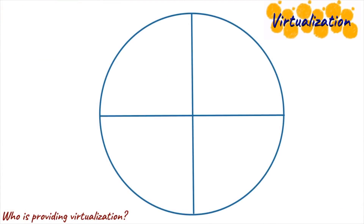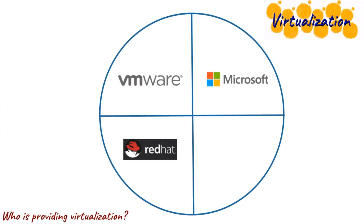When it comes to virtualization as a whole, the four biggest players out there are VMware, Microsoft, Red Hat, and Citrix. Each of these historically has had their own strengths or certain areas of virtualization that they focused on. So let's just talk about what kind of areas those might be.